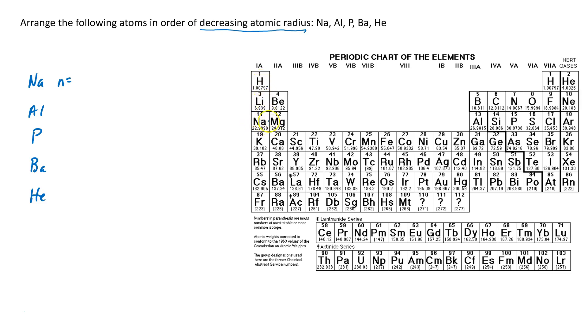So here's sodium, it's in the third shell. Aluminum, also in the third shell. Phosphorus, also in the third shell. So barium is a little bit bigger, it's in the sixth shell. And then helium is in the first shell. So already that tells us something.